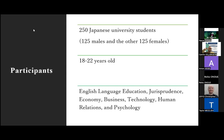The academic major fields varied — some majored in English education, others in law, economics, business, technology, human relations, and psychology. Because in this research study I would like to examine the general finding, I didn't explore target language proficiency levels.